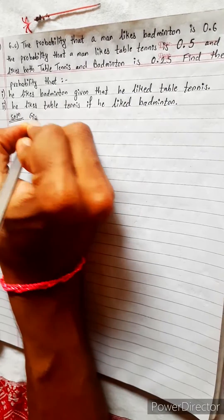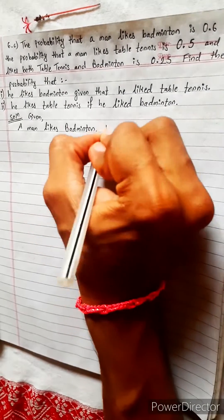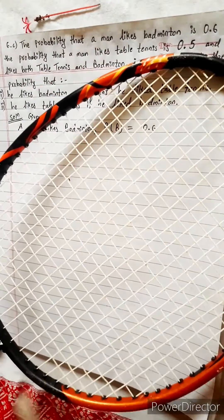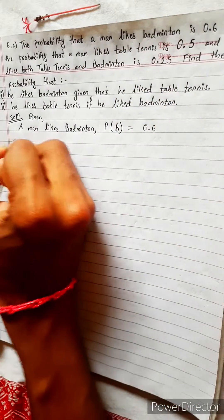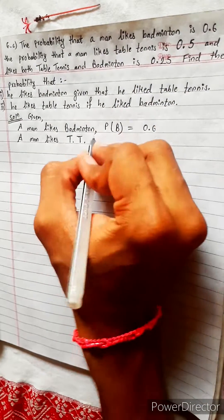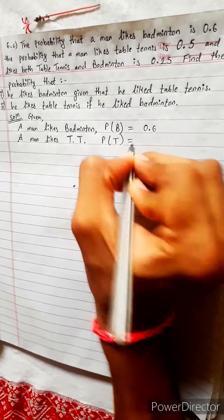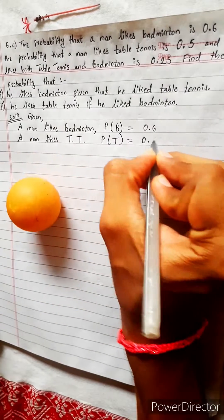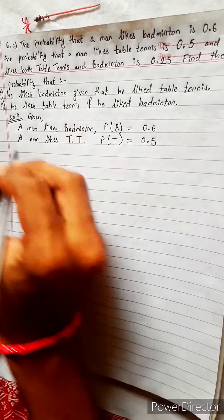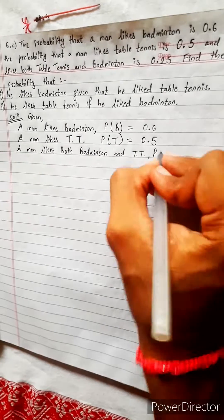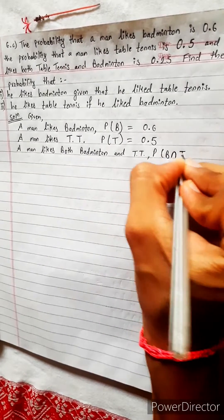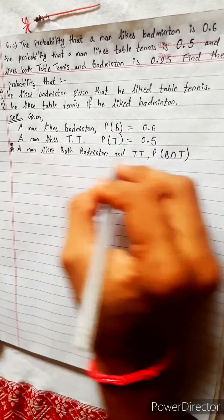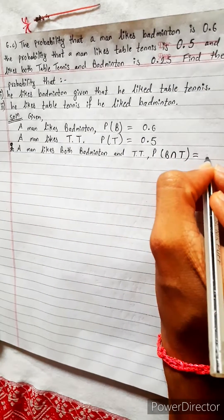First, let's write the given values. A man likes badminton: P(B) equals 0.6. Similarly, P(TT) — table tennis — equals 0.5. And he likes both, so P(TT ∩ B) equals 0.25.